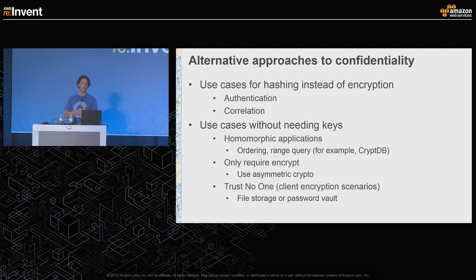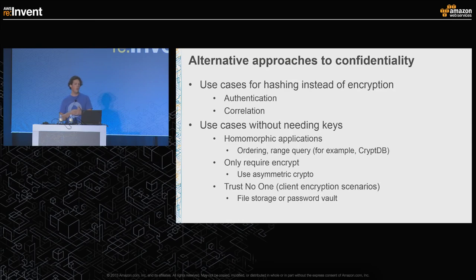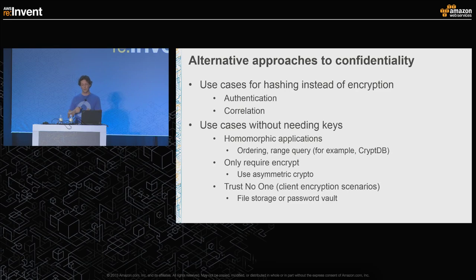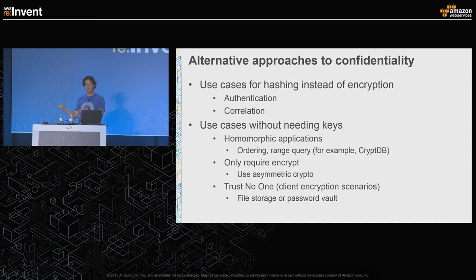Next, you may only require encrypt. Consider the case where you have an ingest endpoint that's publicly available but that service doesn't actually need to decrypt the data. In that scenario you could use asymmetric crypto — put public keys out on your ingest servers but they don't actually need to be doing decryption. Again, think about the least privilege principle and how these fundamentals can help.